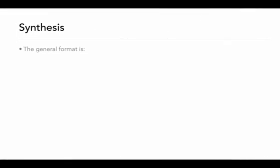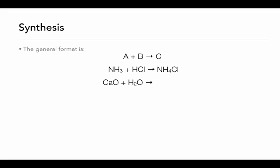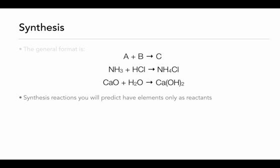Let's look at synthesis reactions first. The general format is pretty simple: A plus B gives you C. You could actually have more than two reactants, but we're going to keep it simple and mainly deal with reactions that involve only two reactants giving us one product. An example would be ammonia and hydrogen chloride — when these two compounds react they're going to form ammonium chloride. Another example would be calcium oxide and water: when you place calcium oxide into water you're going to form calcium hydroxide.